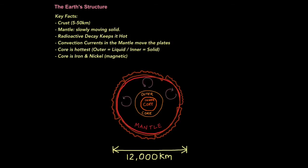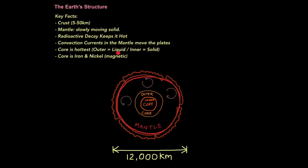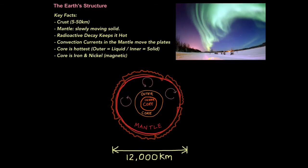Just a quick summary of the key facts. The crust is 5 to 50 kilometres deep and is the outer layer of the Earth. The mantle acts as a slowly moving solid, and radioactive decay keeps it hot. There are convection currents in the mantle that move the plates. The core is hottest — the outer part is referred to as liquid and the inner as solid. The core is iron and nickel, which makes it magnetic and therefore gives the Earth a magnetic field. The Earth's magnetic field protects us from harmful solar radiation. You may have heard of the phenomenon known as the Northern Lights — this is when solar radiation interacts where the field lines are weakest at the North and South Pole.